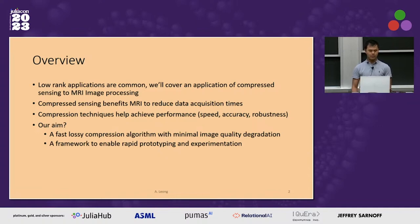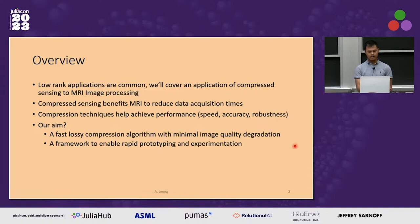If you go into an MRI machine, you spend quite a bit of time there to get scanned, and so people are trying to work on this problem to make it go faster. One of the ways is to undersample the data, and because it's sparse, we can do a decent job at reconstructing the data and at the same time denoise the image. We're interested in the speed, the accuracy of the reconstruction, and robustness if you're going to train machine learning models. Our aim here is identifying fast lossy compression algorithms with minimal artifacts, and Julia has a great framework for doing rapid prototyping and experimentation.